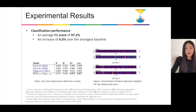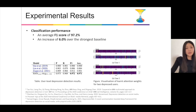In this part, I'll highlight key results from our experiment. As for classification performance, our model achieves an average F1 score of 97%, and this is an increase of 6% over the strongest baseline. The table compares different models for user-level depression detection.